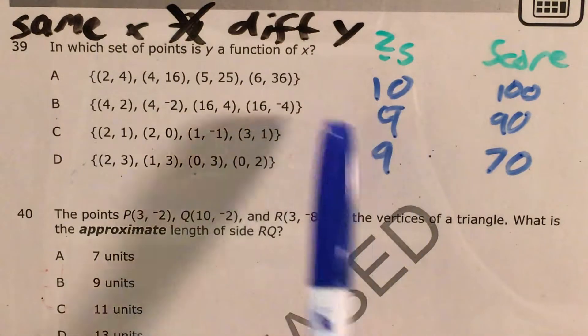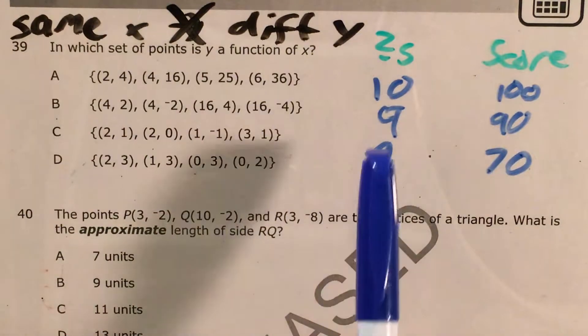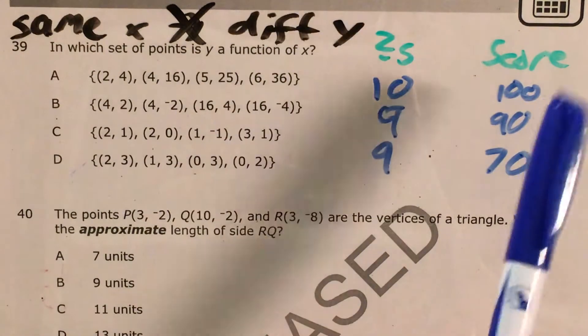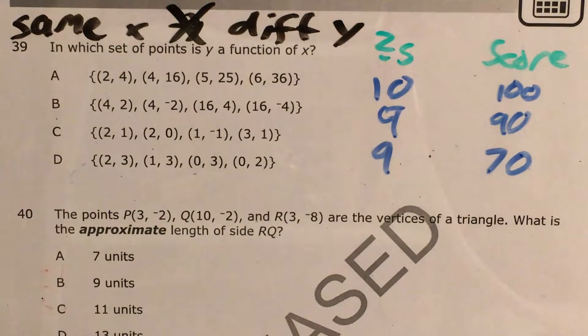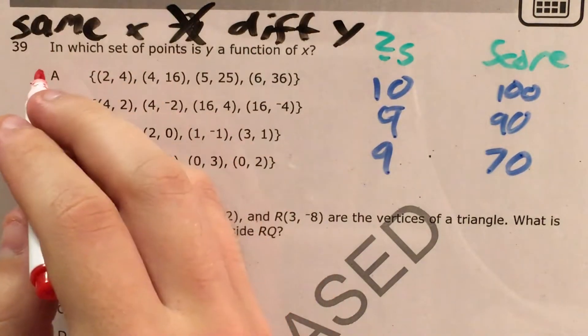We can think of the number of questions we get right as x and our score is y. The same number of questions right should not get us different scores. And so we're just going to look for any of these answer choices where the same x is giving us different y values. So I'll start with A.